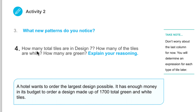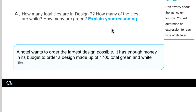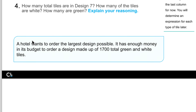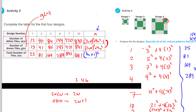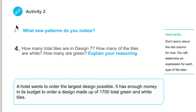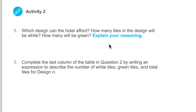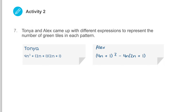Number 4: how many total tiles are in design 7? We answered that — it tells you to explain your reasoning. These are going to be part of your practice questions. A hotel wants to order the largest design possible — they can afford $1,700. Which design? You can answer that question now. And sometimes there are typos in this book — this should be a 6. Complete by writing an expression — we did that already.